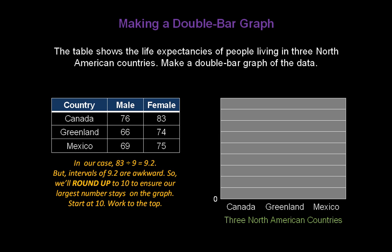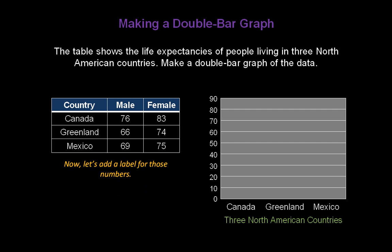So start at 10 and go by increments of 10 all the way to the top of the graph. In our case, our graph will end at 90. Now we need to add a label for those numbers — they represent life expectancies in years.